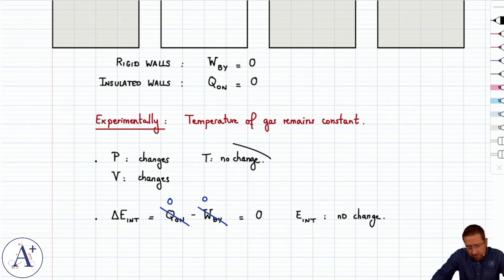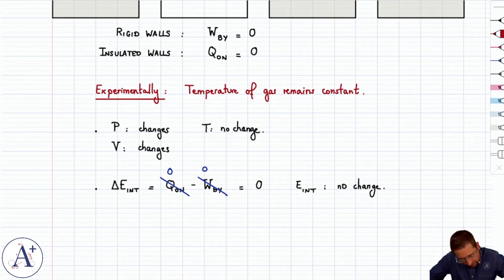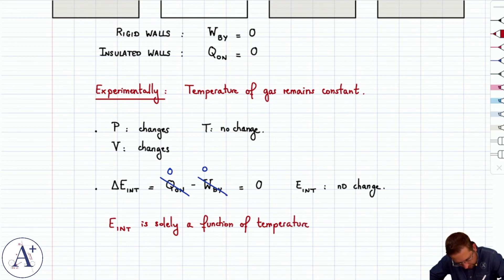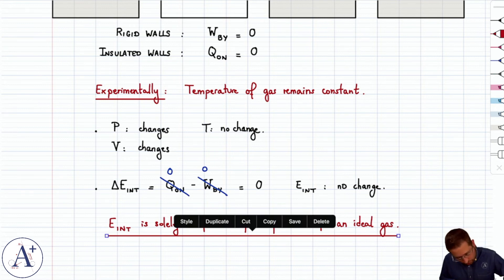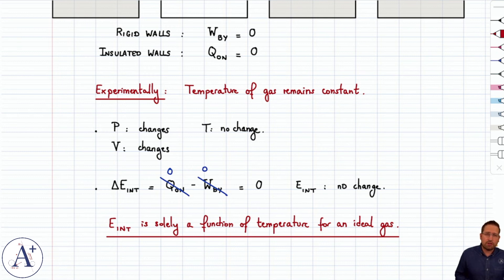And the only reason it doesn't change is because temperature doesn't change. And because temperature is the only thing that doesn't change, pressure and volume change, so E internal staying constant is actually linked to temperature staying constant. And that's how we conclude that E internal is solely a function of temperature for an ideal gas. So E can't be a function of pressure. Pressure changed and E internal didn't. Same thing for volume. And therefore we conclude the important conclusion that E internal is only a function of temperature in the case of an ideal gas.